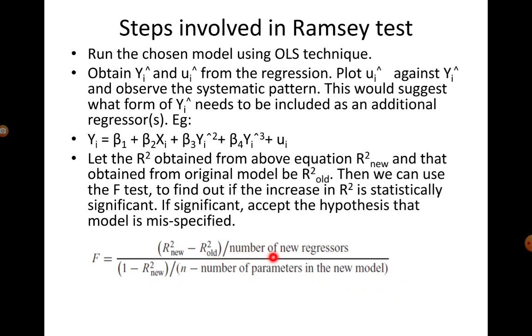So, if the earlier equation was yi equals beta 1 plus beta 2 xi plus vi, here we have included two new regressors, yi square and yi cube. And the denominator you have 1 minus R square new divided by n minus number of parameters in the new model.